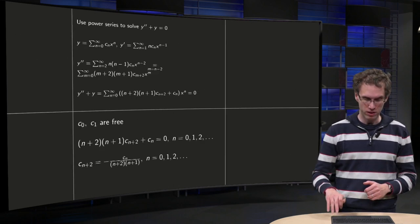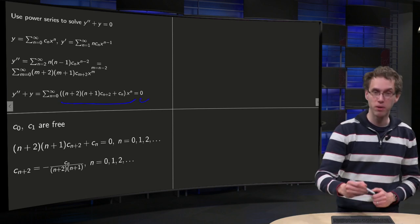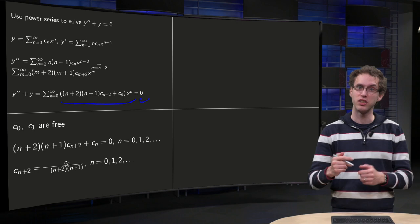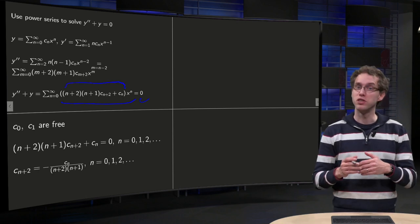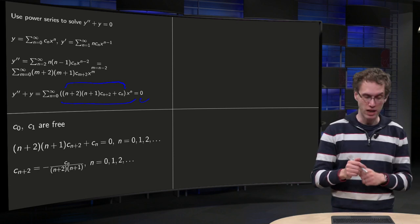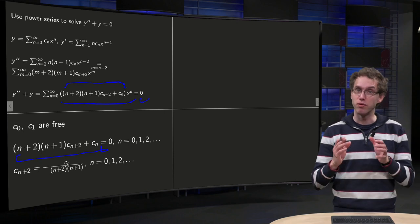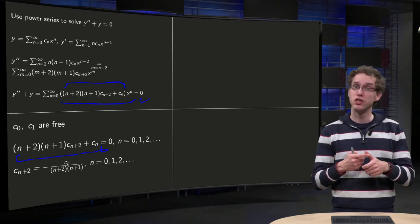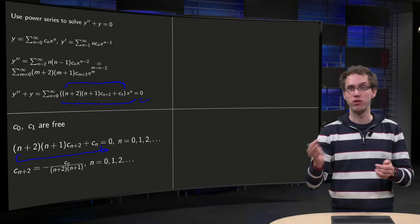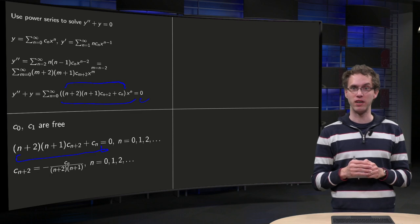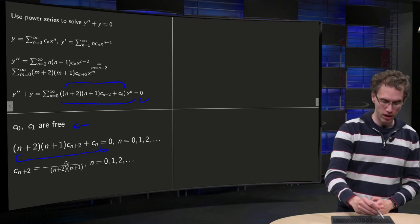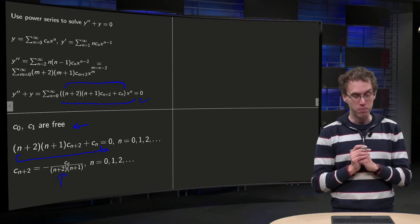Now we observe that we have a power series equal to 0, which means that on the right-hand side we have 0 times 1 plus 0 times x plus 0 times x squared, etc. This means that all coefficients need to be 0 for all powers of x, so for n equals 0, 1, 2, etc., the coefficient before xⁿ has to be 0. We see that c₀ and c₁ are free to choose, because the relation expresses c₂ in terms of c₀ and c₃ in terms of c₁, and so on, but c₀ and c₁ are not specified by the relation. The recurrence relation is: c_{n+2} equals minus cₙ over (n+2)(n+1), for n from 0 onwards.